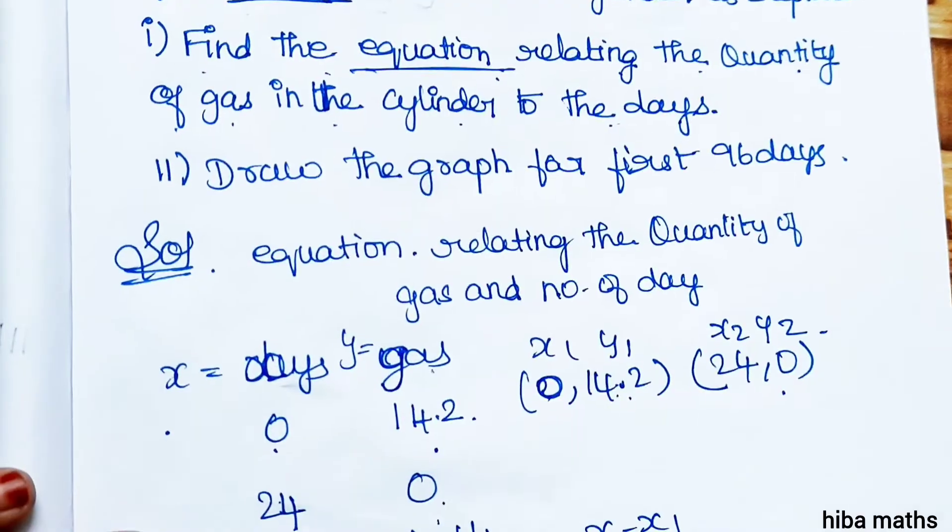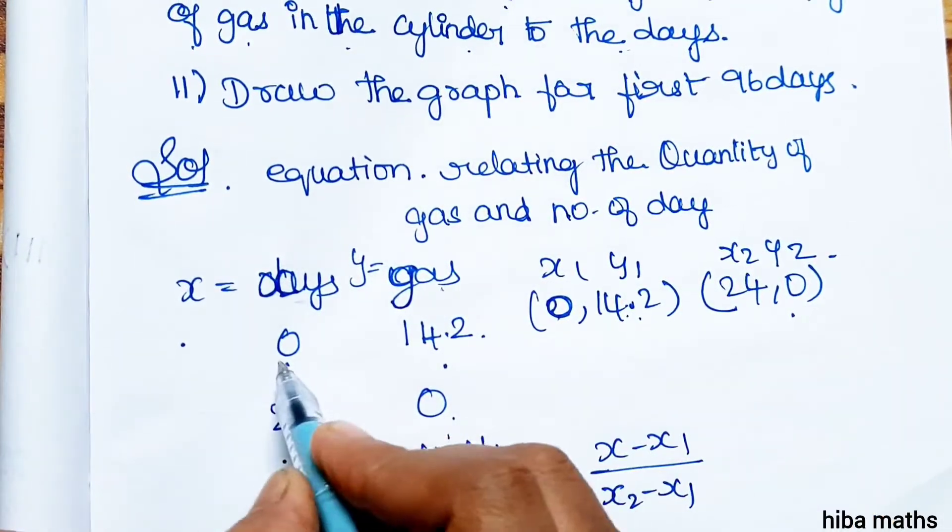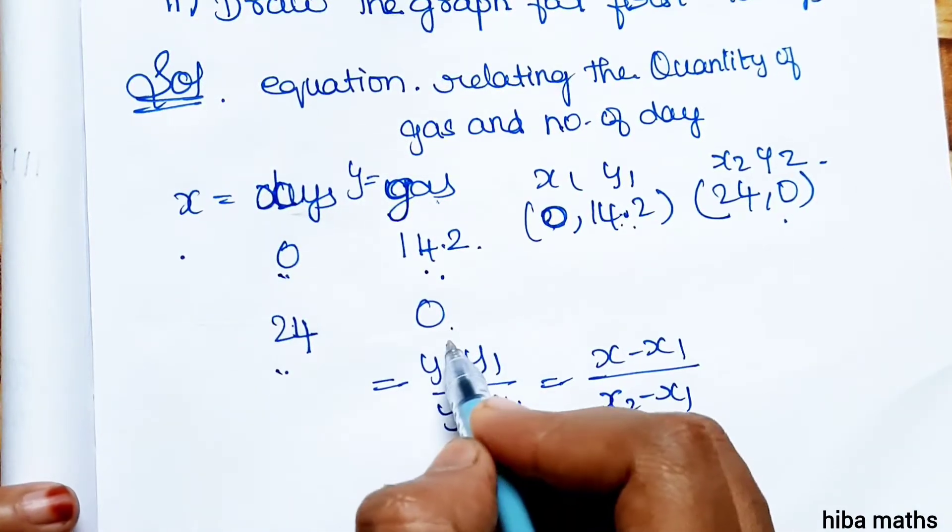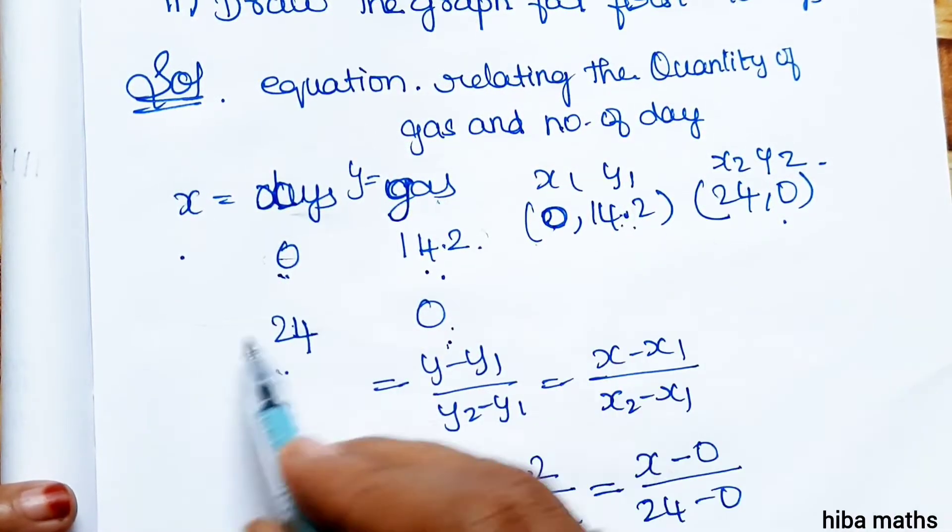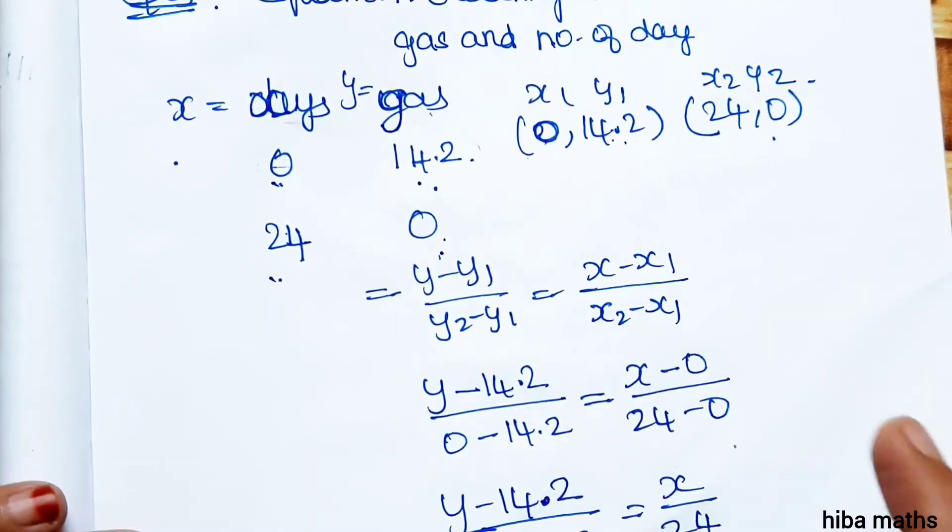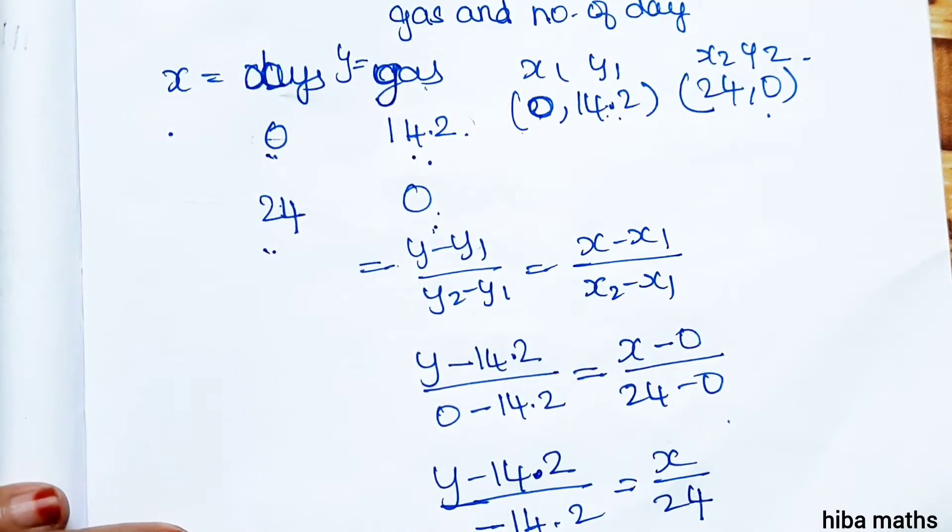To summarize: First, day 0 has full gas of 14.2. The 24th day is 0. These are the two points: x1, y1 and x2, y2. Use the two-point equation: (y - y1)/(y2 - y1) = (x - x1)/(x2 - x1).